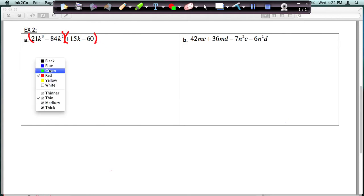We're going to look at our first two terms only. I'm going to ignore these last two here. What do 21k cubed and 84k squared have in common? The number that divides into both is 21, and then the smallest exponent is k squared. So I'm going to divide both of these by 21k squared.